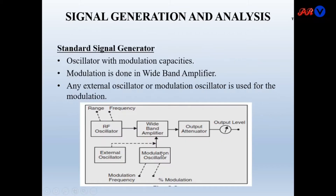The standard signal generator has some extra elements like a wide-band amplifier, a modulation oscillator, and an external oscillator may also be used. So the standard signal generator has modulation capabilities. Modulation is done in the wide-band amplifier. Any external oscillator or modulation oscillator can be used for modulation purposes.